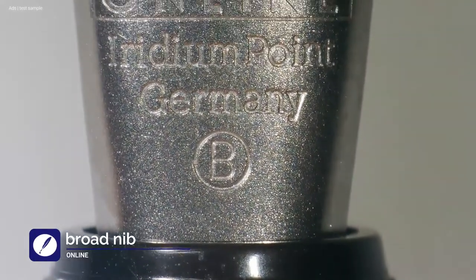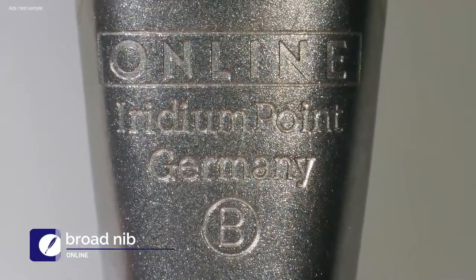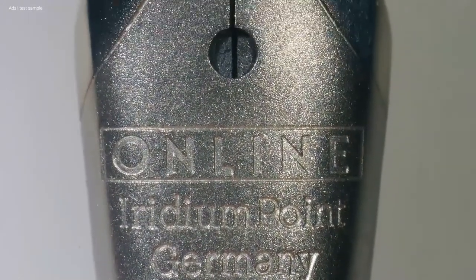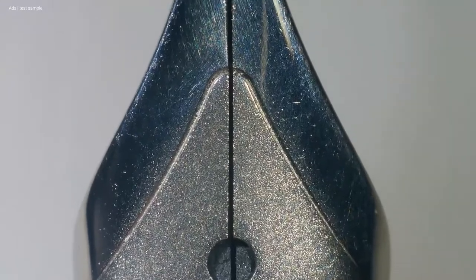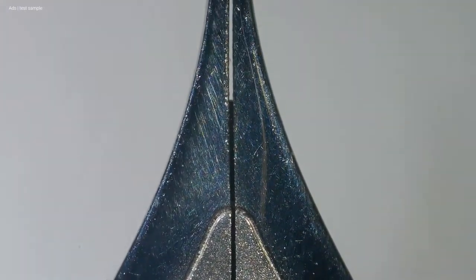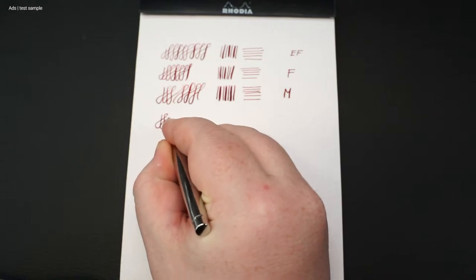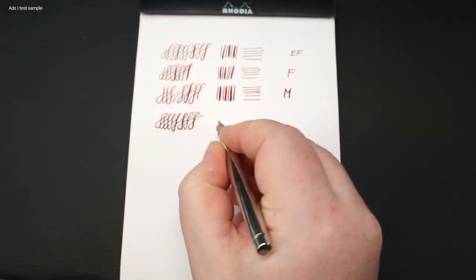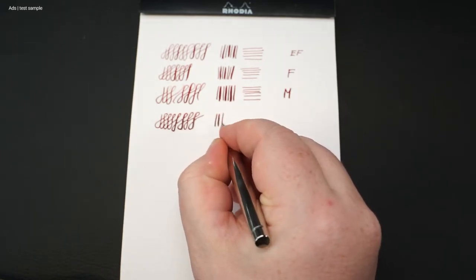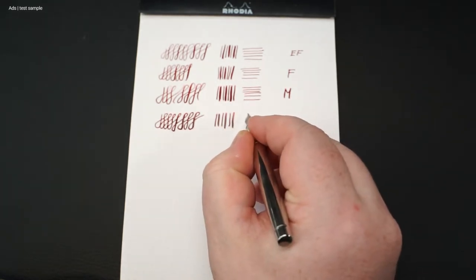The broad nib. In detail you can now clearly see the wider writing tip. Like all other nibs, the writing sample shows a slight flex. In this case the flex is quite wide with such a broad nib.